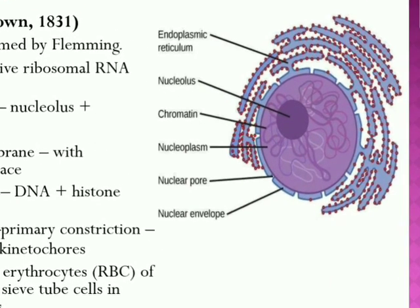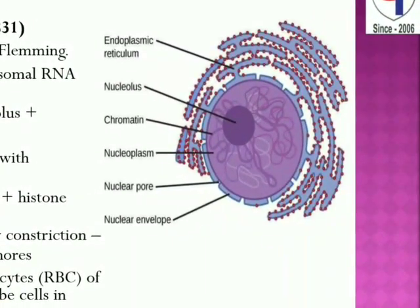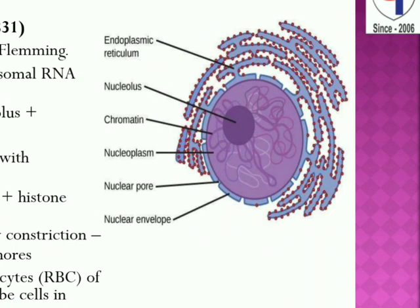Now we study the internal structure of the interface nucleus. The interface nucleus consists of: nuclear envelope, nucleoplasm, nucleolus, and chromatin network.